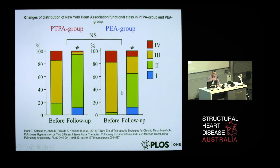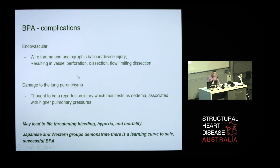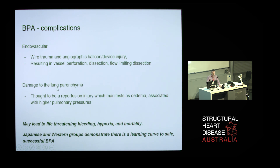Remember, there was no riociguat in these patients — and this demonstrates the improvements in functional class distribution. The complications of BPA include standard endovascular complications such as wire trauma or balloon damage, typically resulting in vessel perforation, dissection, or flow-limiting dissection. Something particular to the lung is damage to the lung parenchyma — a reperfusion injury manifesting as oedema, associated with higher pulmonary pressures. This may lead to life-threatening bleeding, hypoxia, and mortality.